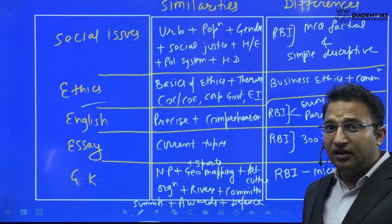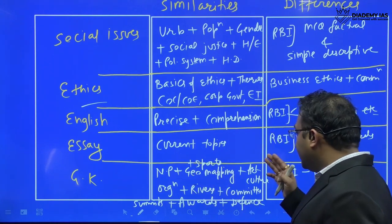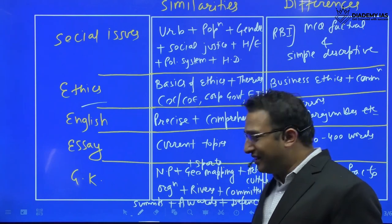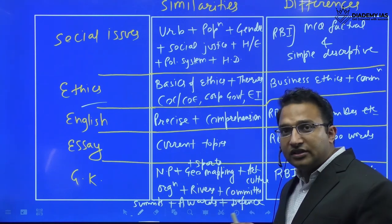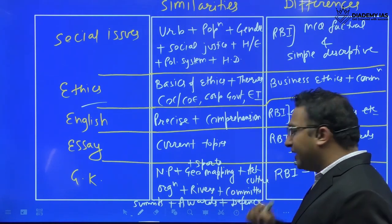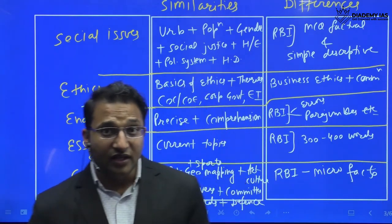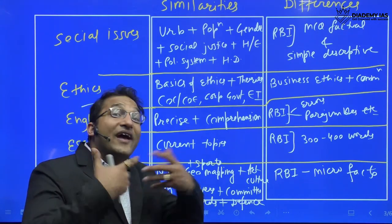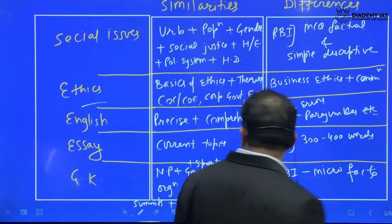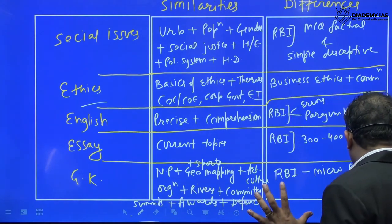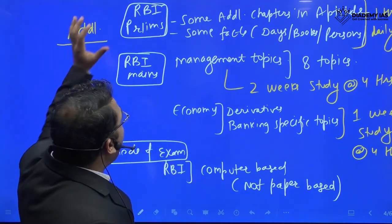For general knowledge, many areas already covered in UPSC prelims are tested in RBI as well — national parks, sports, geographical mapping, important locations, dams, art and culture like important festivals and dances, important organizations and their summits, important rivers, committees, awards, and defence exercises. The same areas are asked in RBI but in a much more factual, micro-detail manner.